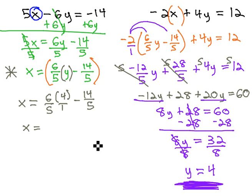Well, 6 fifths times 4, putting it over 1 is 24 fifths minus 14 fifths. That's a nice common denominator. 24 minus 14 is 10 fifths, which reduces to 2.